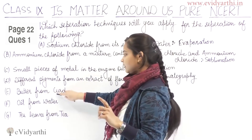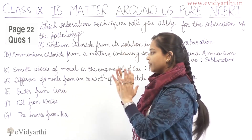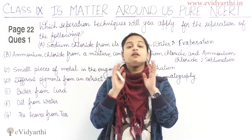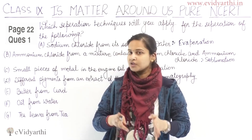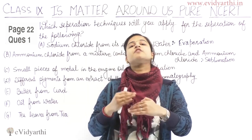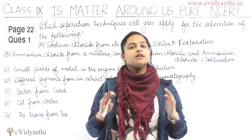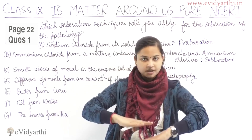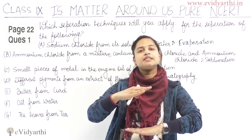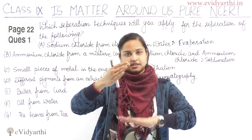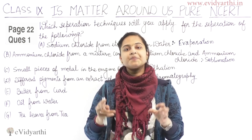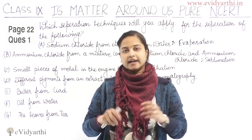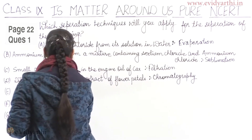Butter from curd — we have to extract butter from curd. The process is known as centrifugation, and this process is based on the principle of difference in densities. The component with the highest density will settle at the bottom. The component with lower density will rise to the top. This way we can separate butter from curd using centrifugation.